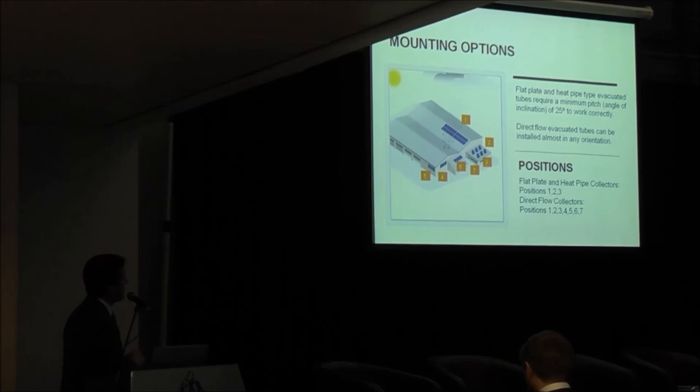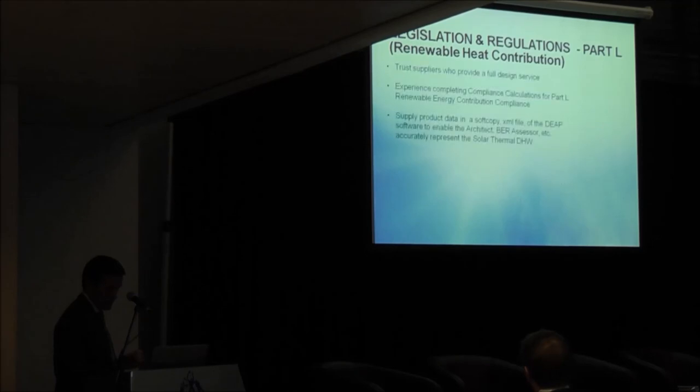How can you mount it on the roof? So the flat plate and the heat pipe tubes require a minimum pitch of 25 degrees. The direct flow can be installed any way you want, but there are certain disadvantages to direct flow. We would find direct flow systems tend to be put more on industrial commercial buildings, and the heat pipe solution tends to be put on domestic solutions. You can see just a graphic there on all the different places you can put the product. Remember, you don't have to have the pitched roof, as I said, and you don't have to have it south facing.